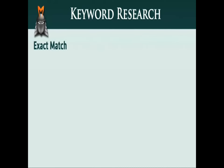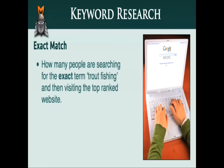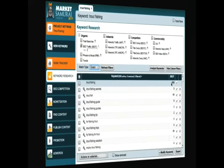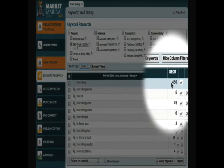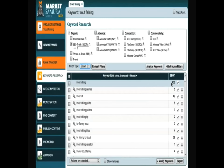Let's start with the exact match type. With the match type set to exact match, the SEO traffic figure relates to how many people are typing in the exact term Trout Fishing into Google and then clicking through to visit the number one ranked site in the search results. So in this example, with my match type set to exact, I can see that 456 people per day are typing the exact phrase Trout Fishing into Google and then choosing to visit the top ranked website.